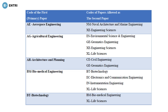If you are from the Aerospace Engineering department, you can attend two papers: Naval Architecture and Marine Engineering, and Engineering Sciences. If you are from Agricultural Engineering, you can attend four papers: Environmental Science and Engineering, Geomatic Engineering, Engineering Sciences, Life Sciences, and Agriculture and Planning Engineering. If you are from Agriculture and Planning Engineering, your options are Civil Engineering and Geomatic Engineering.